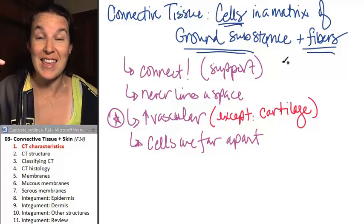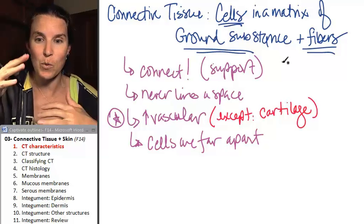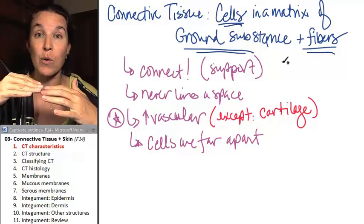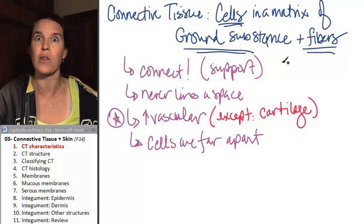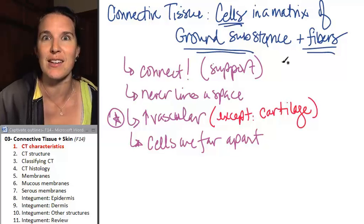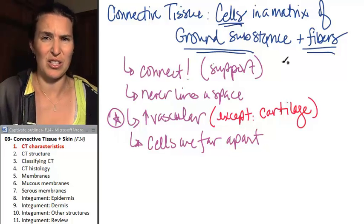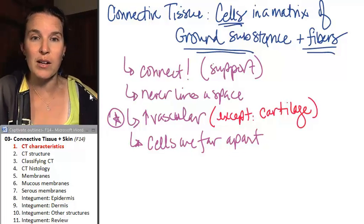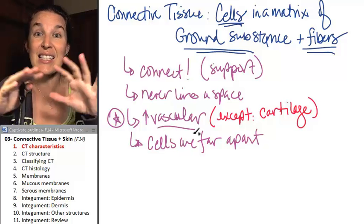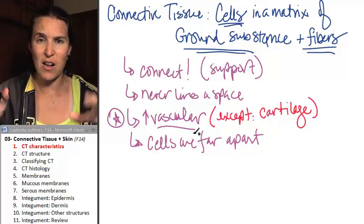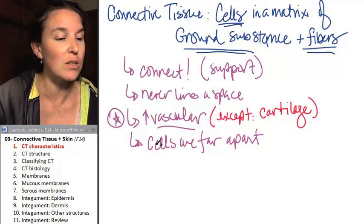Remember when I drew that picture in epithelial tissue? We were doing basement membranes. And I was showing you how the basement membrane connects to the connective tissue underneath it. And that connective tissue just looks super messy with blood running through it because it's vascular and cells like spread out all over the place. That's what connective tissue looks like.